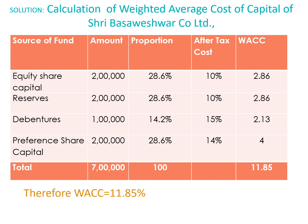First, we will see how to find weighted average cost of capital by using proportion. For this, you have to make 5 columns: sources of fund, amount column, proportion column, after-tax cost column, and weighted average cost of capital. The sources of fund and amount columns are already provided in the problem, so you have to just write them down as they are.